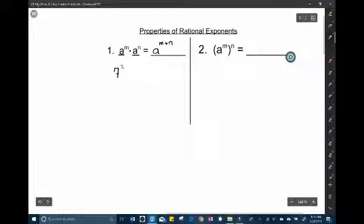For example say you had 7 squared times 7 to the third. That would be the same as 7, getting ahead of myself, 7 to the 2 plus 3 is the fifth. Okay so you can just leave that.